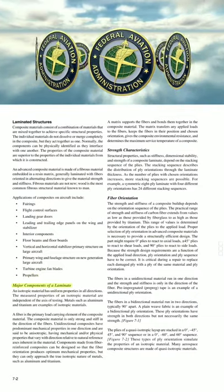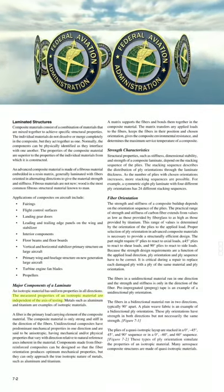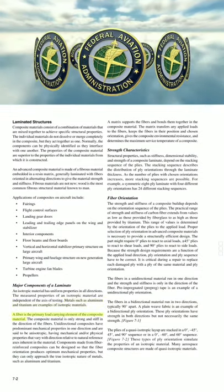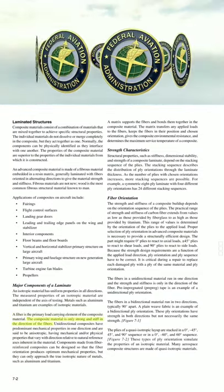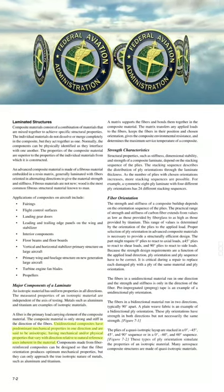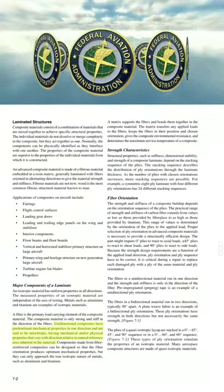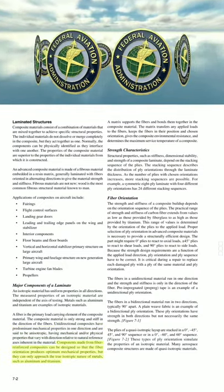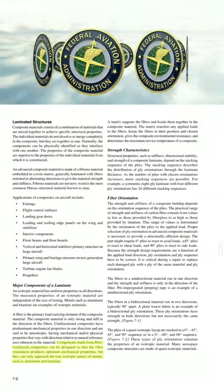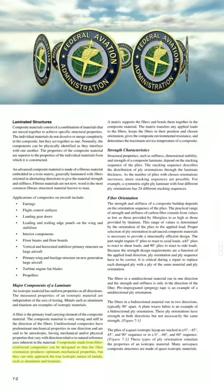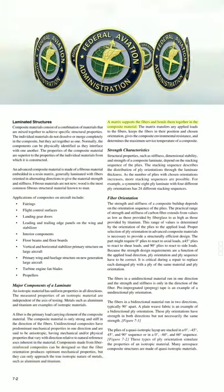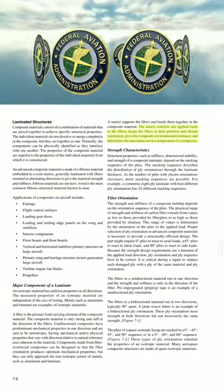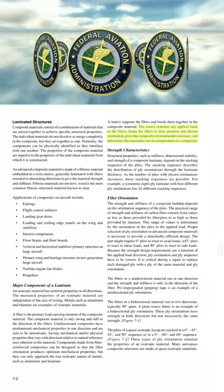Major components of a laminate. An isotropic material has uniform properties in all directions; the measured properties are independent of the axis of testing. Metals such as aluminum and titanium are examples of isotropic materials. A fiber is the primary load-carrying element of the composite material. The composite is only strong and stiff in the direction of the fibers. Unidirectional composites have predominant mechanical properties in one direction and are said to be anisotropic, having mechanical and/or physical properties that vary with direction relative to natural reference axes. A matrix supports the fibers and bonds them together. The matrix transfers applied loads to the fibers, keeps the fibers in position and orientation, gives the composite environmental resistance, and determines the maximum service temperature.